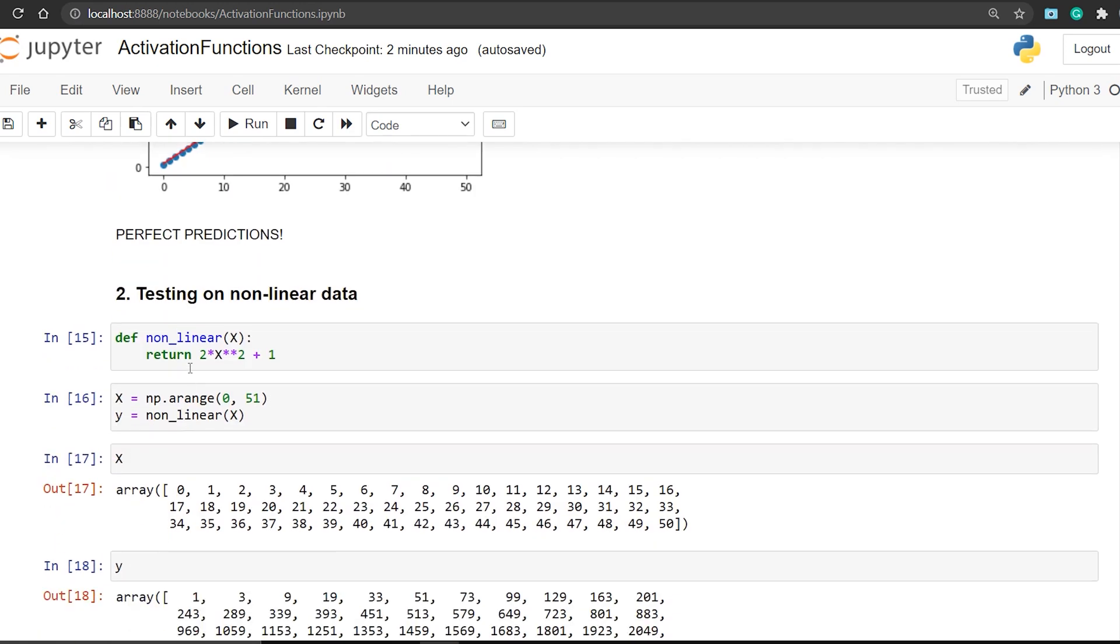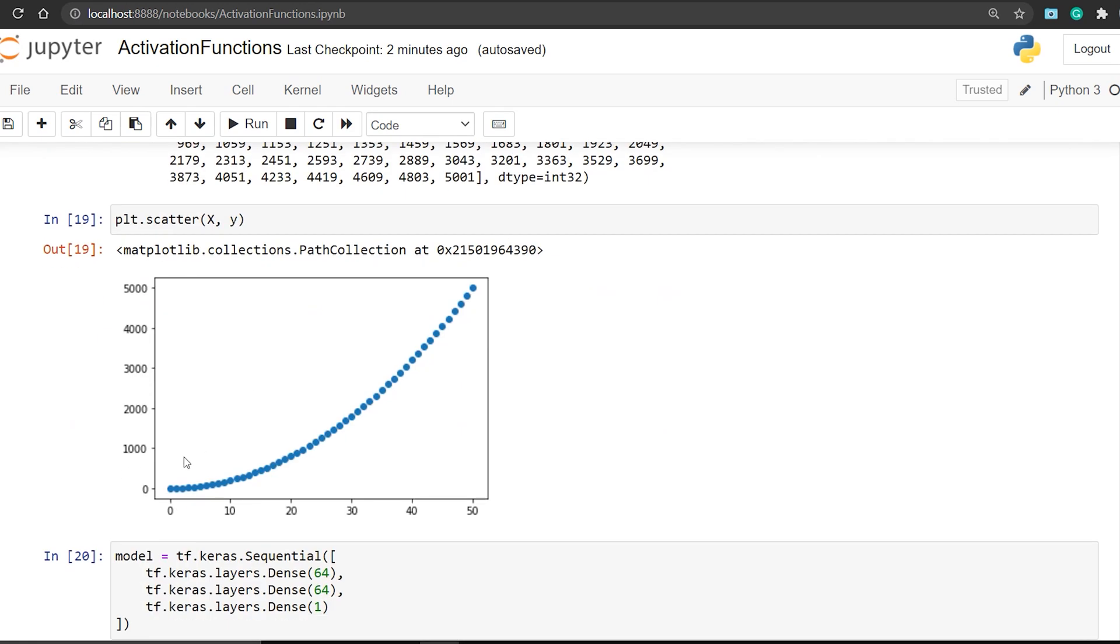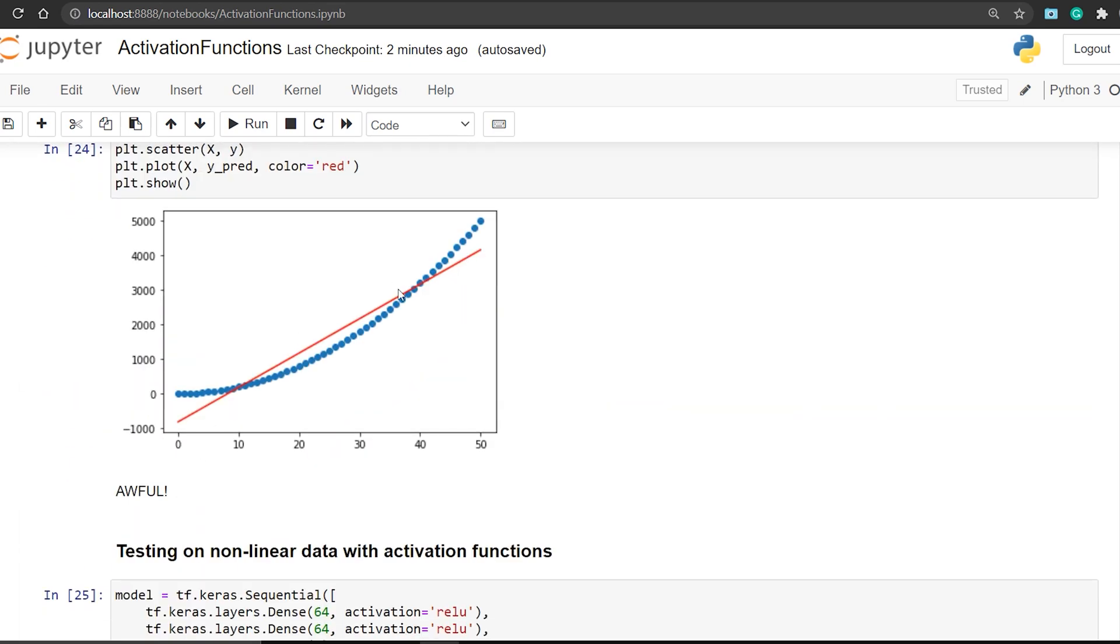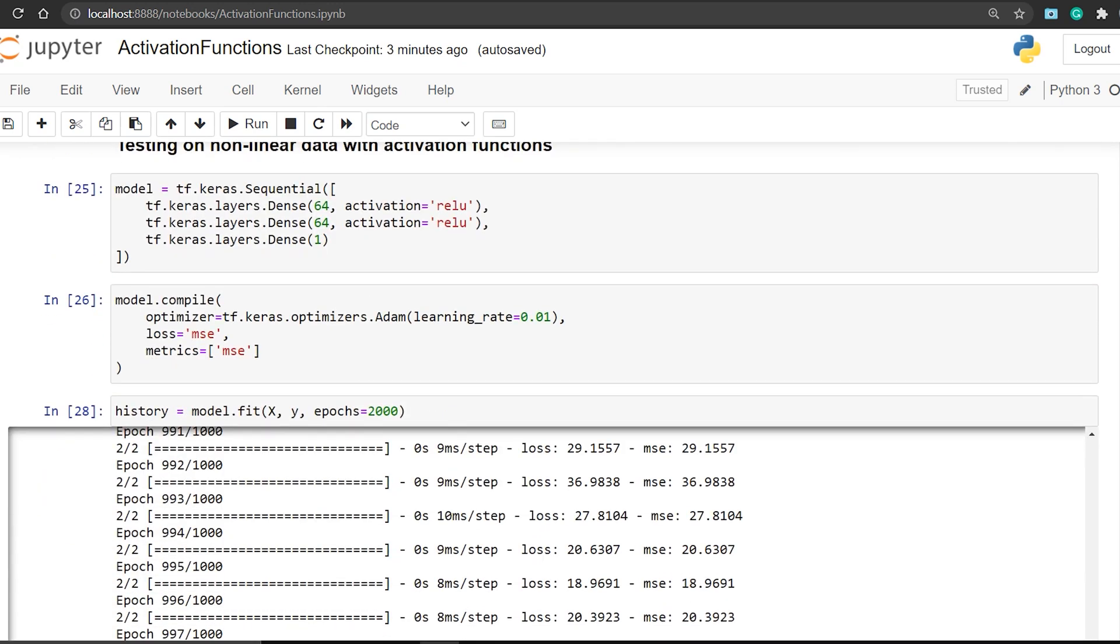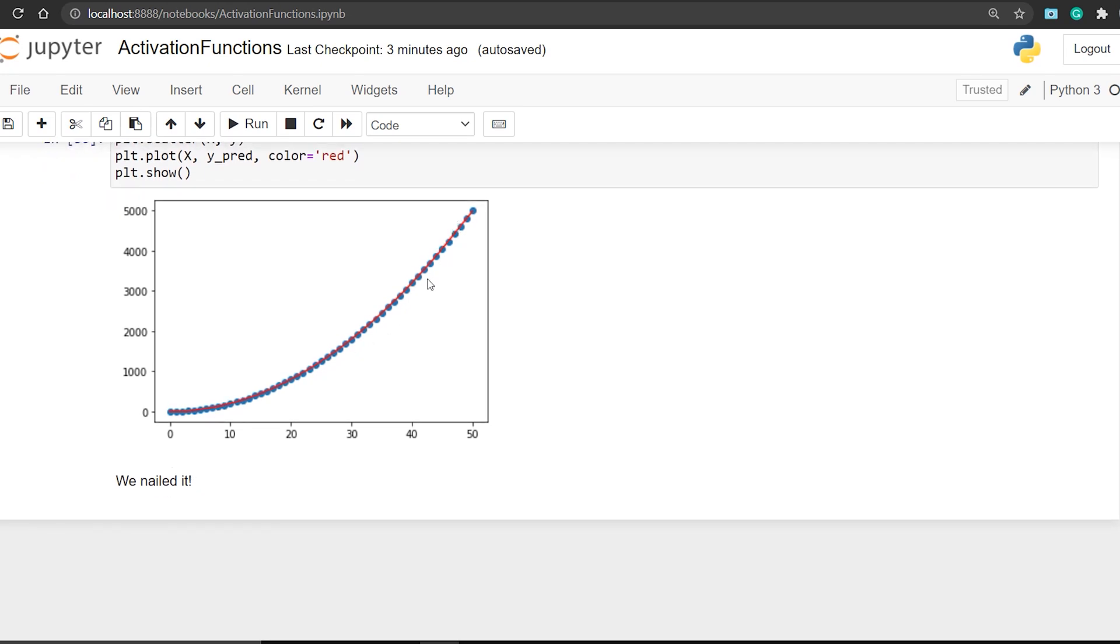After training, you can see this red line has completely fitted to our linear data. Good. Now let's create non-linear data. As you can see, now our data is not linear, it is curvy. If we fit our model on this data, it has completely screwed up. We want the red line to also curve with the data, but it is rigid.